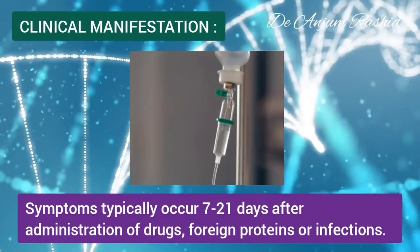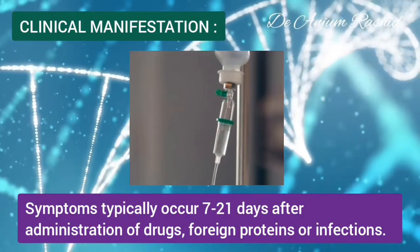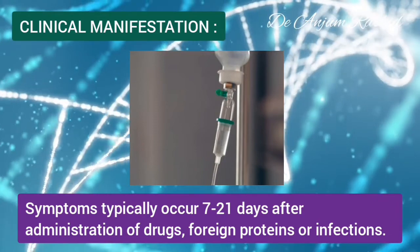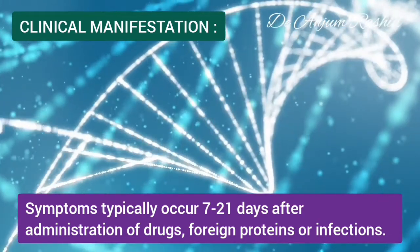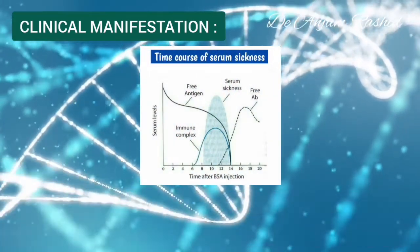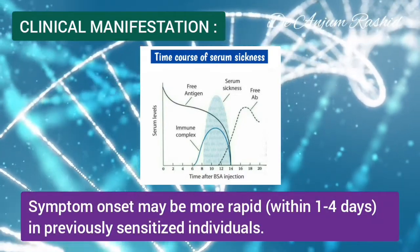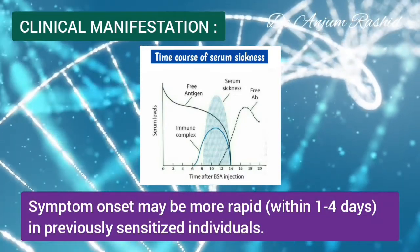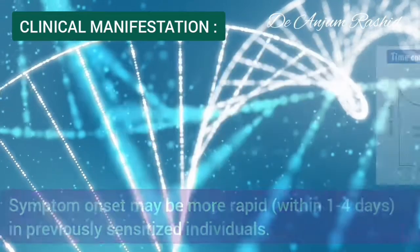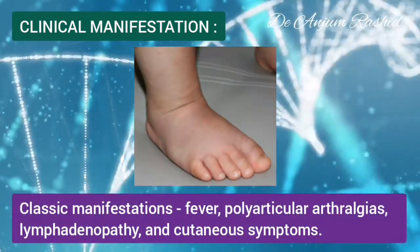Regarding clinical manifestations, the symptoms of serum sickness typically occur 7 to 21 days after the administration of drugs, foreign proteins, or infections. Symptom onset may be more rapid, within 1 to 4 days, in previously sensitized individuals.